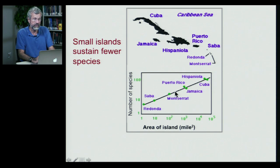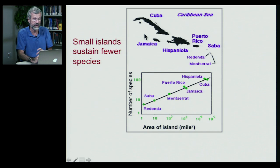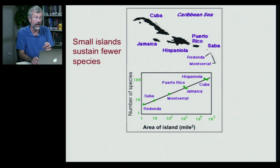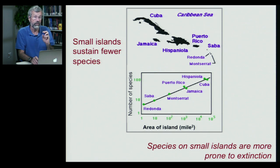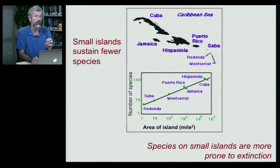The number of species found naturally on each island is much greater on the larger islands — so much greater biodiversity on the big islands. These small islands have fewer species and through time they're more likely to go extinct. So you have less biodiversity the smaller the island, and the more likely you are to lose species from those small islands.